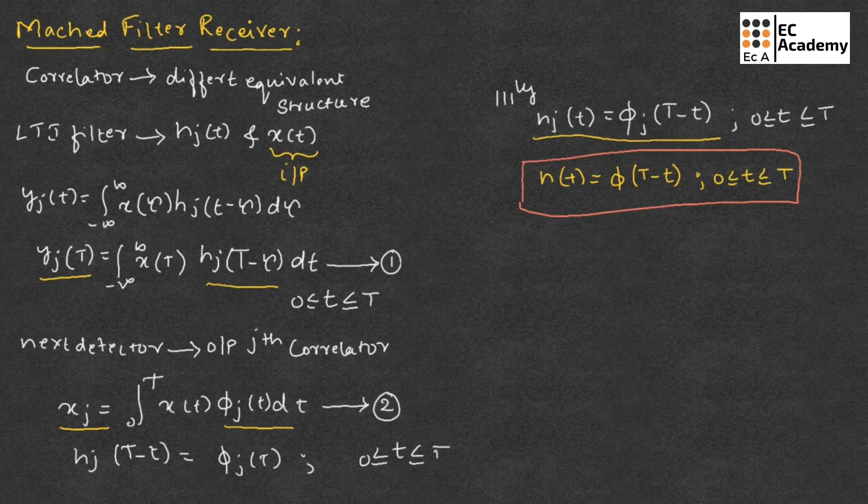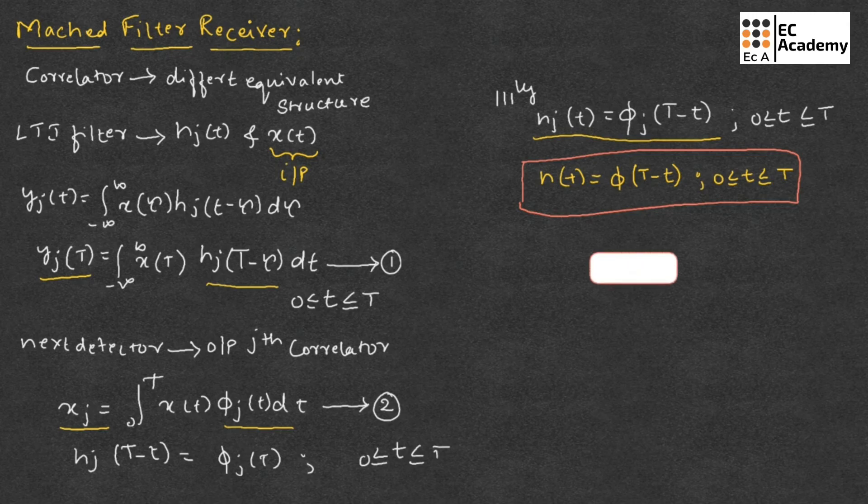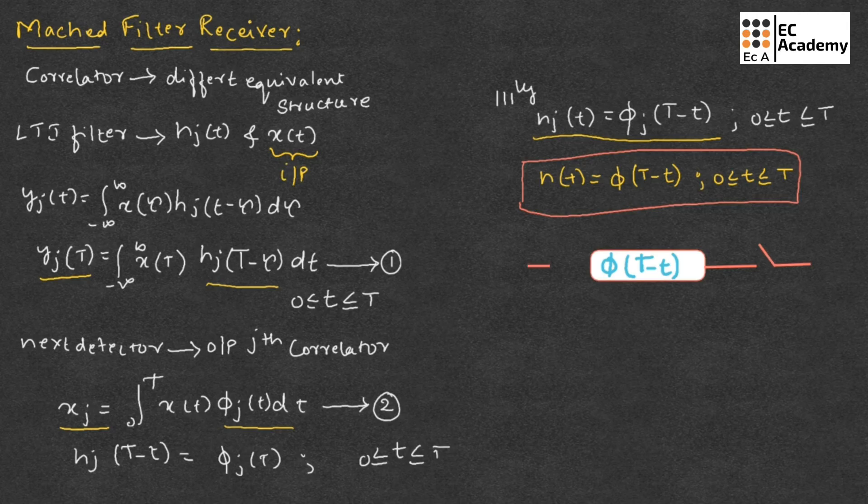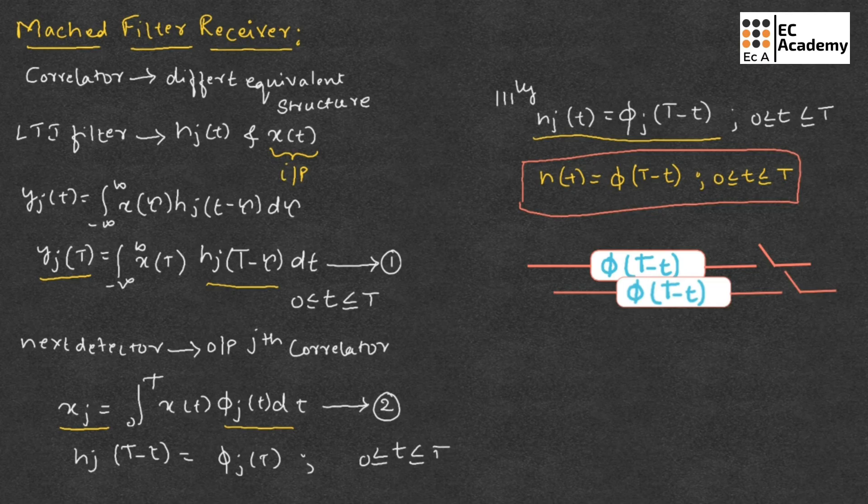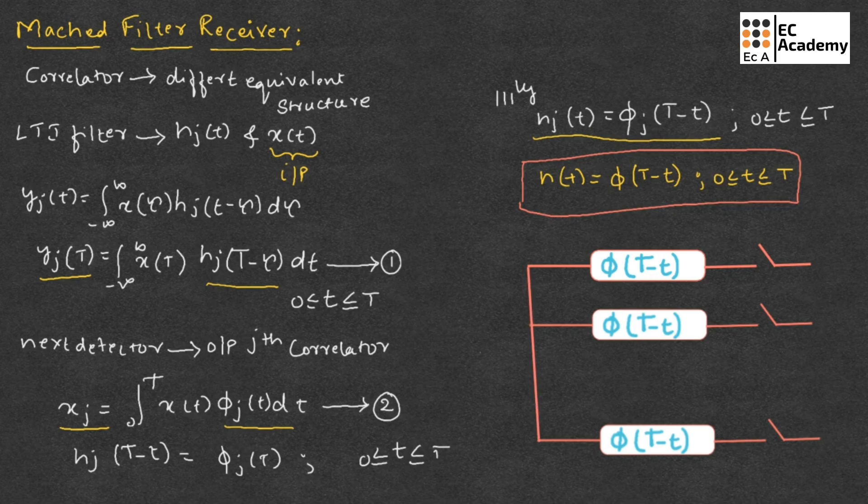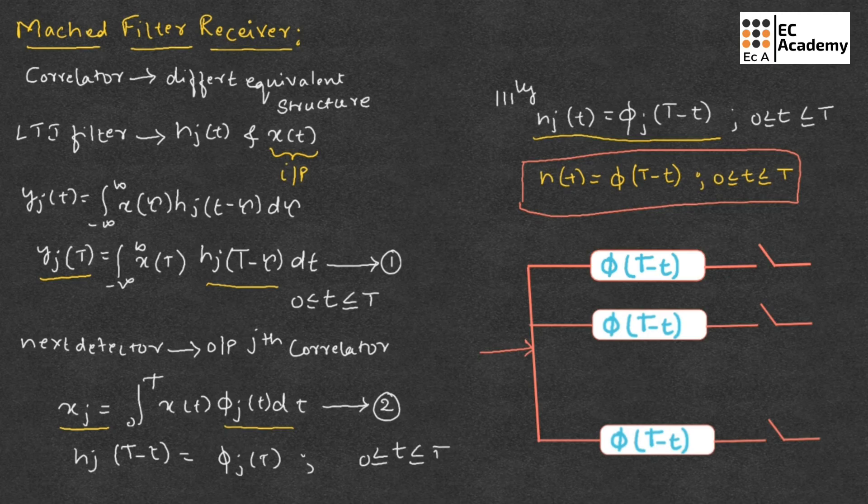Now let us draw the matched filter receiver. Let us take phi of capital T minus small t. So let us take multiple samples of these copies. Let us place below this. Again we will take the same sample. Let us connect all this setup.